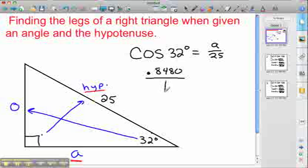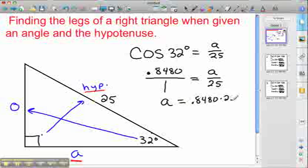And then I'm going to place that over 1 and set that equal to A over 25. What this allows me to do is to cross multiply. So A equals .8480 times 25. When you take that .8480 times 25, you get A is approximately equal to 21.2.